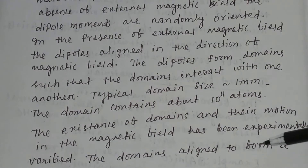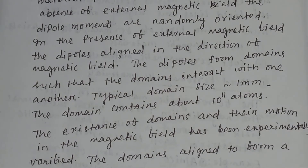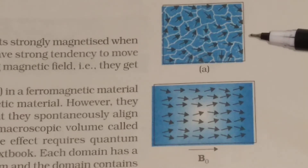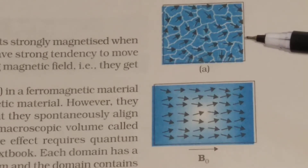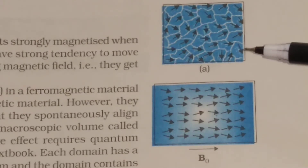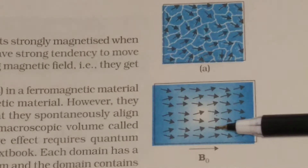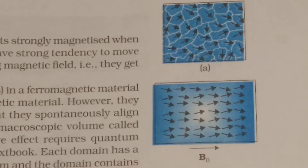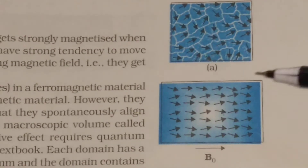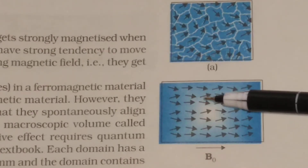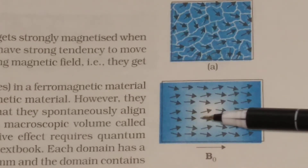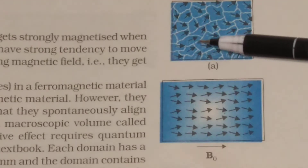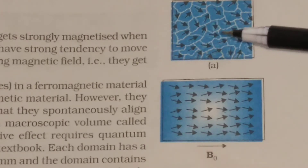The domains align to form a giant domain. In this picture, you can see the domain structure in ferromagnetic materials. In the presence of an external field, the individual dipoles in the domain align in a perfect order. But in the absence of a magnetic field, there is no perfect order of the dipoles inside the domain.